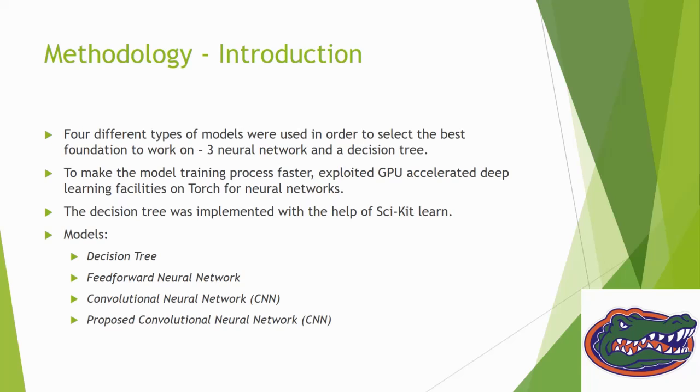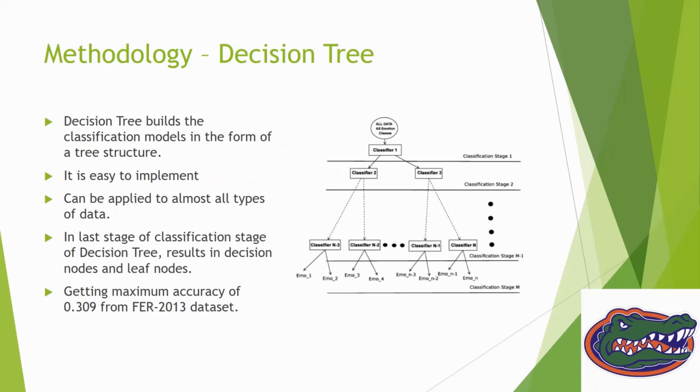The first model is a decision tree. The reason for choosing a decision tree is it's easy to implement and can be applied to almost all types of data. The last stage of classification results in decision nodes and leaf nodes, which can be assumed as the seven emotion categories. By implementing the decision tree on the existing database, we got accuracy of 0.309, which is very low compared to the standard. That's why we moved towards neural networks.